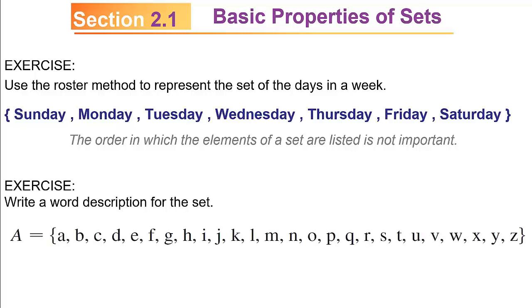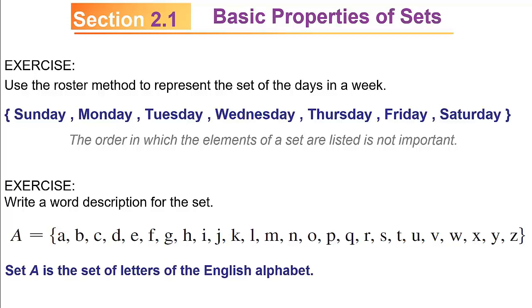How about this one? Write a word description for the set A equals the set containing A, B, C, D, E, F, G, H, I, J, K, L, M, N, O, P, Q, R, S, T, U, V, W, X, Y, Z. How would you describe that? I would say A is the set of letters of the English alphabet — I say the English alphabet because there are other alphabets, and they're not all the same.